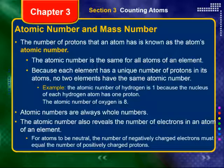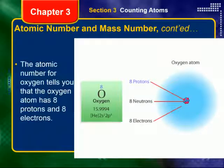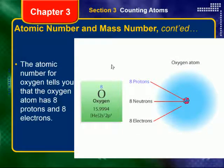The atomic number also reveals the number of electrons in an atom of that element. As long as you assume that the atom is neutral, the number of negatively charged electrons must equal the number of positively charged protons. Here's a graphical representation — this is oxygen, number eight, and therefore has eight protons. If we assume it's neutral, we can also see that it has eight electrons. We'll talk about what the eight neutrons and the 16 mean as we move forward.